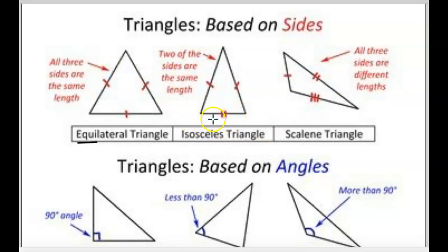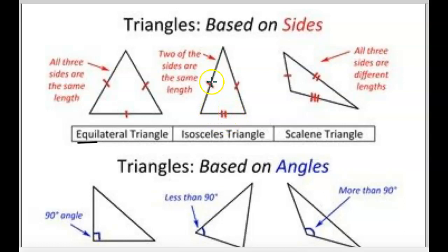For isosceles, you'll see the little slashes. Two of the sides are the same length — this mark and this mark are the same, but this one's not. So this one's different. If you were to measure them, these two are the same length, but not that one. It's shorter. So that one is your isosceles triangle.